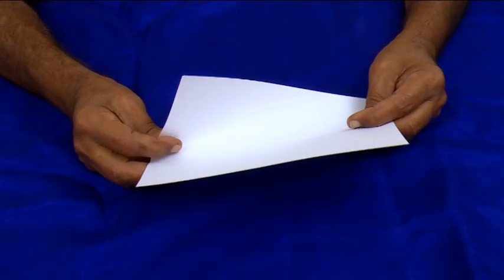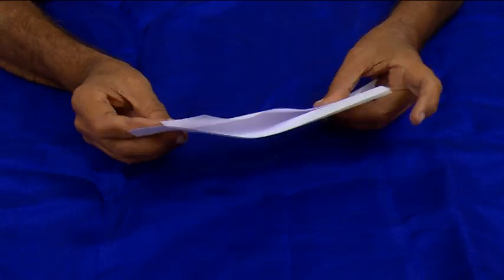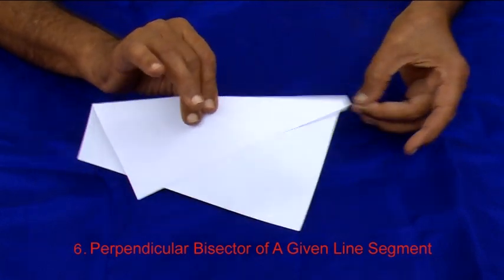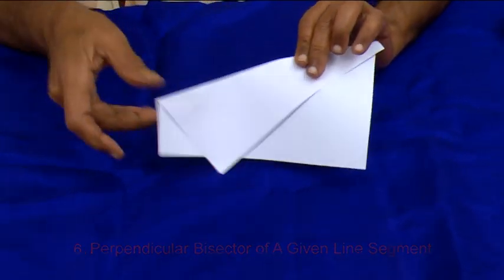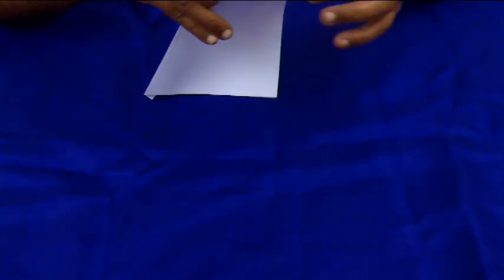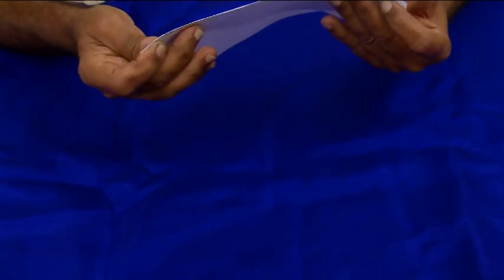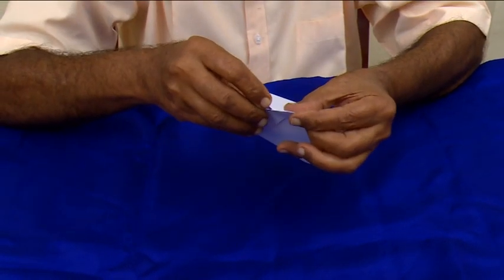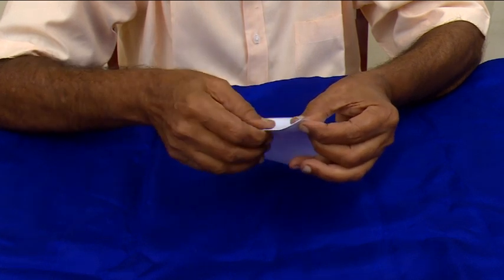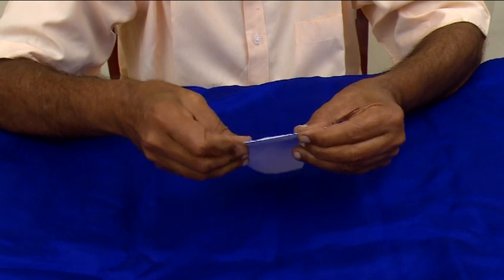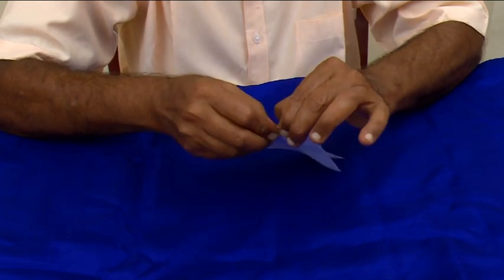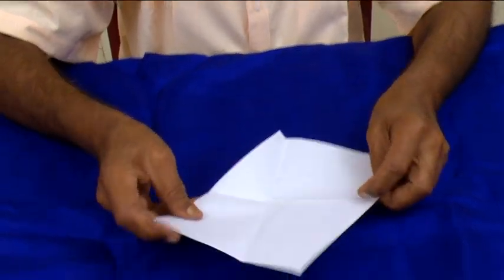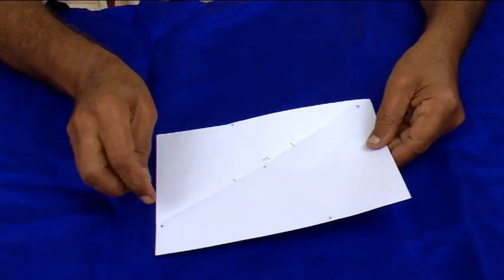Now you can see how to draw the perpendicular bisector to a given line segment. This is the given line segment. Now take the two end points, bring them together to meet at one point, then merge it like that. Then slowly crease it like this. Now you have got the perpendicular bisector of the given line segment AB.